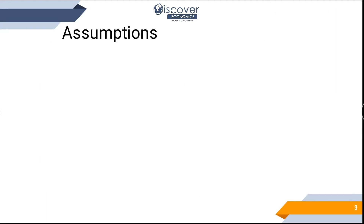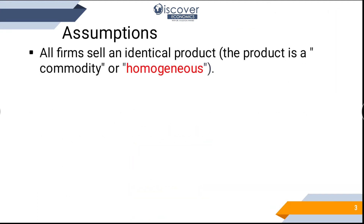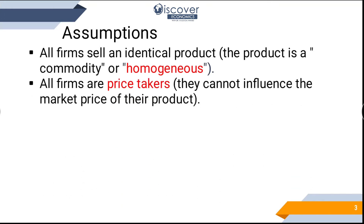Now, what are the assumptions of perfect competition? The first is homogeneous products. The second is that firms are price takers — when you bring your onions or carrots to the market, you are not supposed to change the prices. Prices are predetermined by the forces of demand and supply, so your production cannot change market prices.